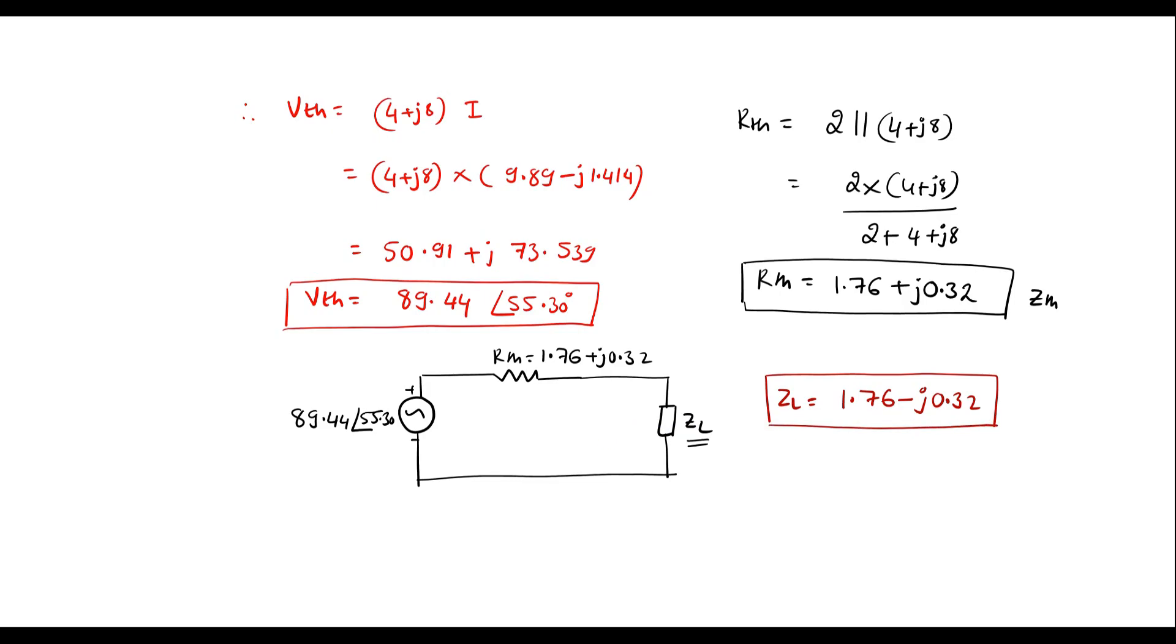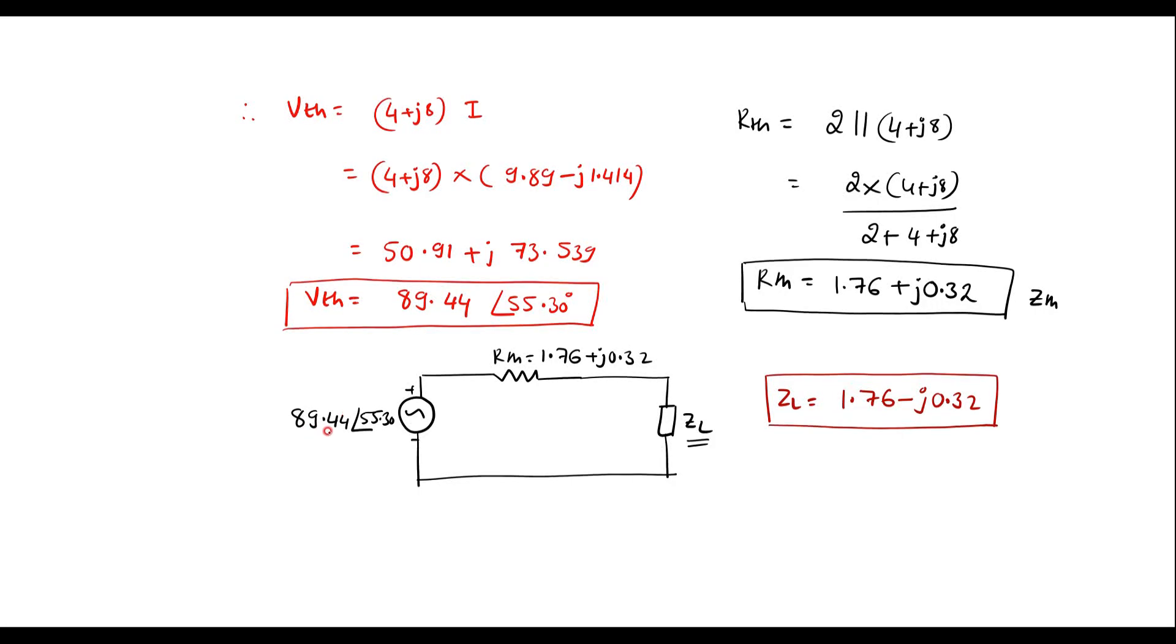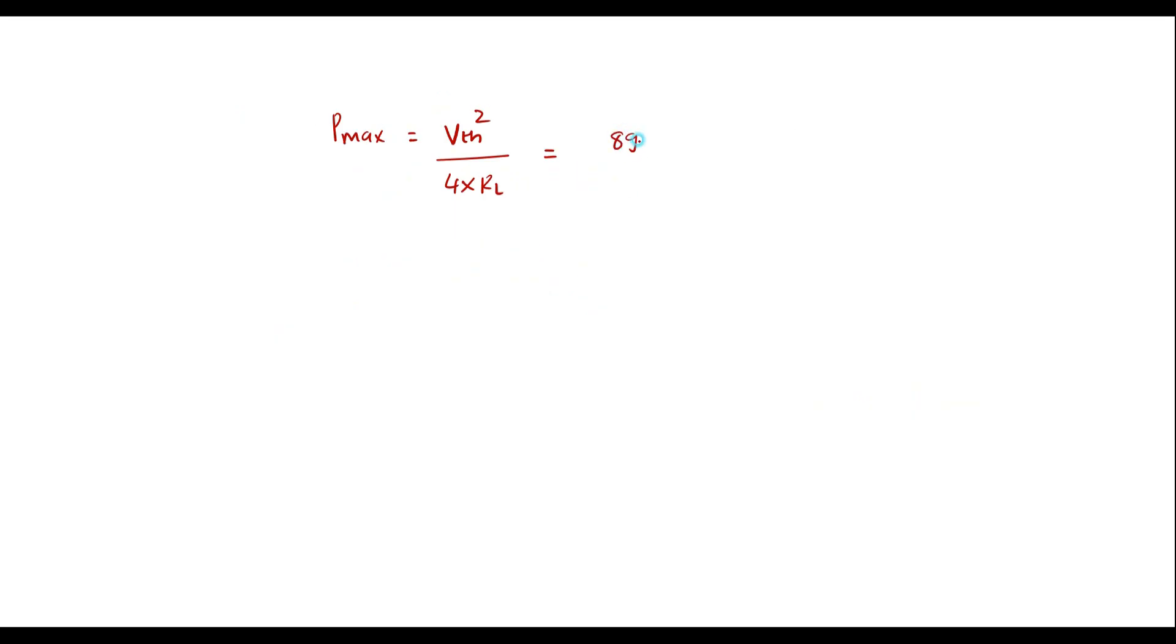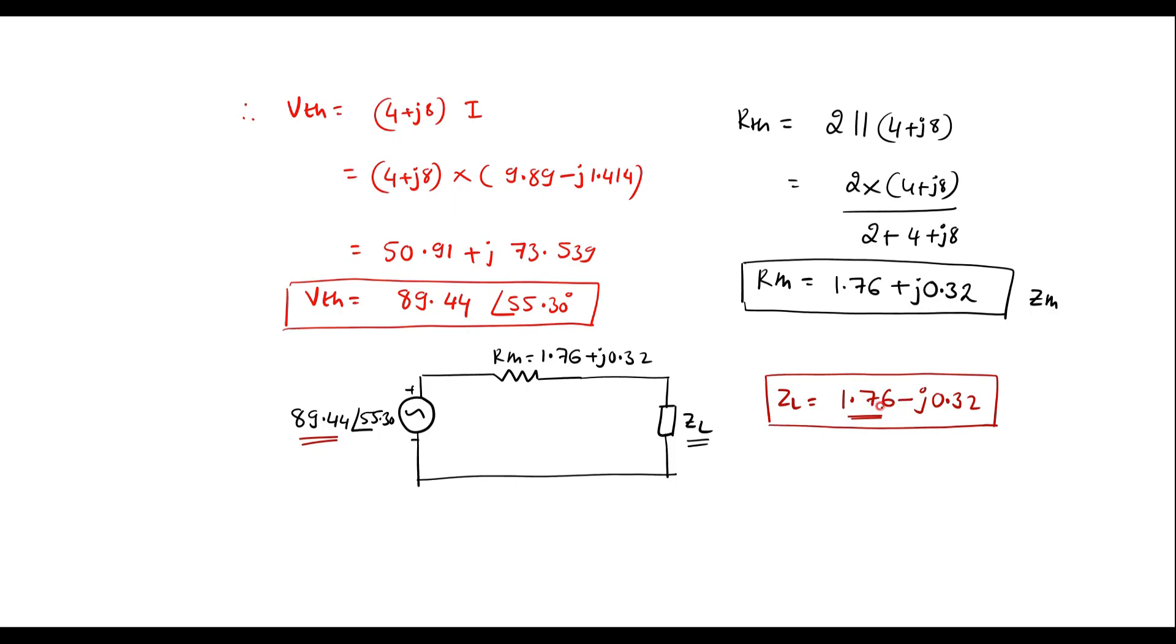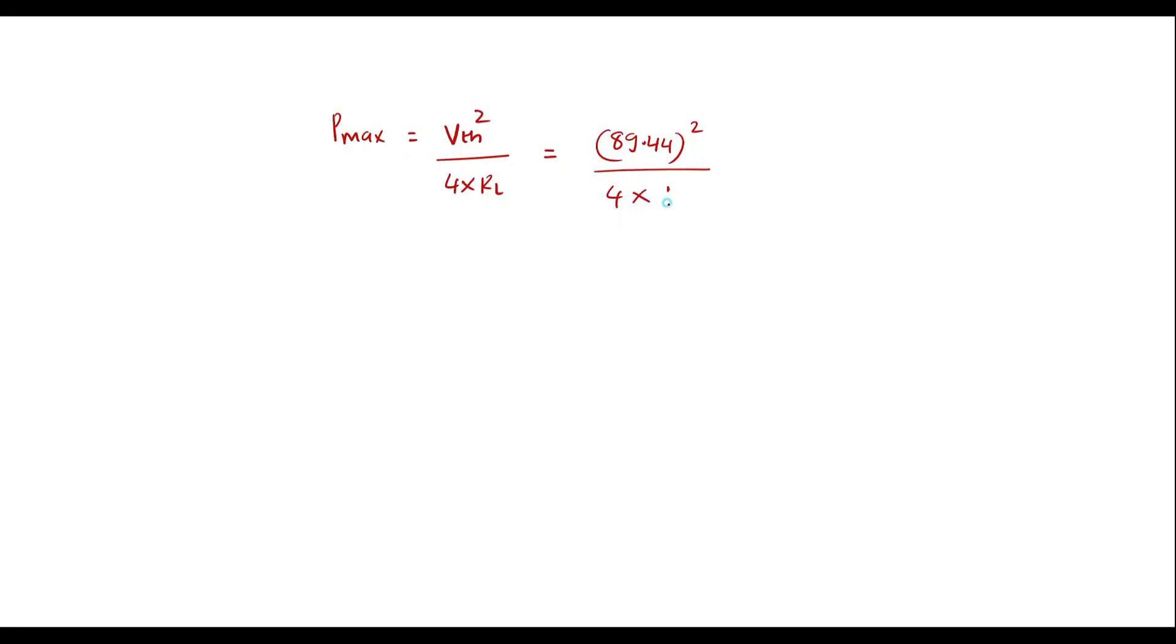Now let me calculate the maximum power. So maximum power can be calculated as Pmax is equal to Vth square divided by 4 into RL. That is we have Vth. So Vth value is 89.44, take only magnitude part that is 89.44 square divided by 4 into RL. Here RL means take only real number that is 1.76. So solving this we will get maximum power is equal to 1136.29 watts. So therefore the maximum power transferred to the load is 1136.29 watts.